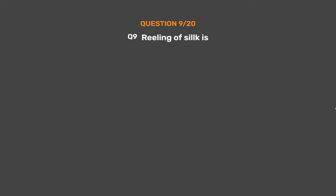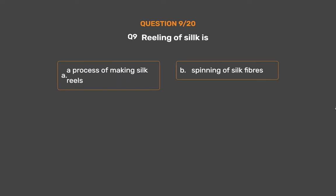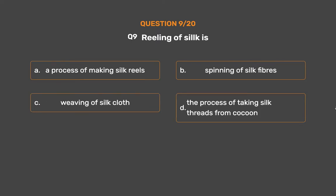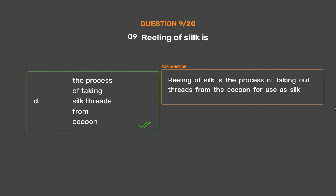Question No. 9. Reeling off silk is — Option A: A process of making silk reels, Option B: Spinning of silk fibers, Option C: Weaving of silk cloth, Option D: The process of taking silk threads from a cocoon. The correct answer is Option D: The process of taking silk threads from a cocoon. Reeling off silk is the process of taking out threads from the cocoon for use as silk.